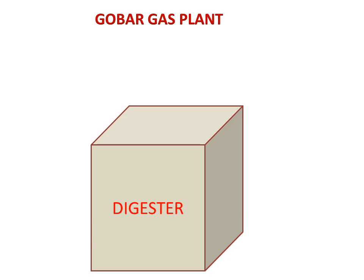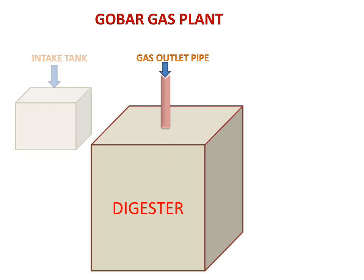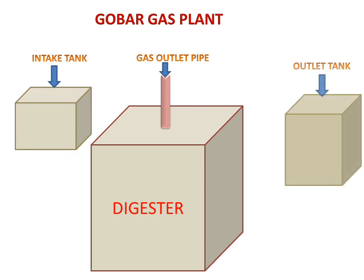This is a digester in which our cow dung and waste will be digested. This is a gas outlet pipe connected to the digester. This is an intake tank and this is an outlet tank.